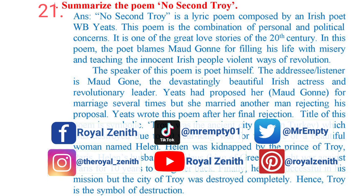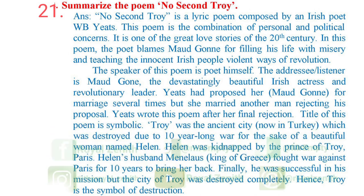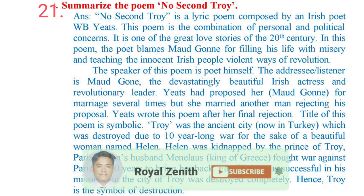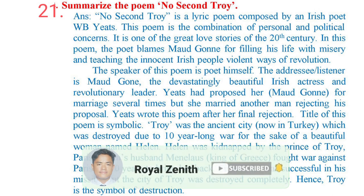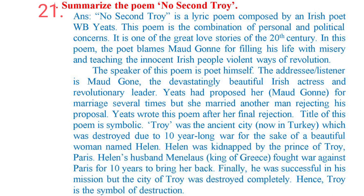Question 21: Summarize the poem 'No Second Troy.' Answer: 'No Second Troy' is a lyric poem composed by Irish poet W.B. Yeats. This poem is a combination of personal and political concerns and one of the great love stories of the 20th century. In this poem, the poet blames Maud Gonne for filling his life with misery and teaching the innocent Irish people violent ways of revolution. The speaker is the poet himself; the addressee is Maud Gonne, the devastatingly beautiful Irish actress and revolutionary leader. Yeats had proposed to Maud Gonne for marriage several times, but she married another man, rejecting his proposal. Yeats wrote this poem after her final rejection.